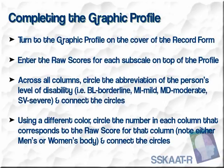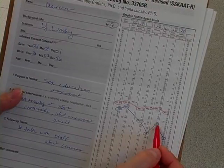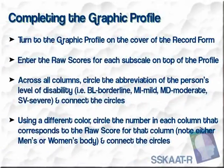To complete the graphic profile, once all the subscale scores have been recorded, turn to the graphic profile on the cover of the record form. Enter the raw score for each subscale on the top of the profile. Across all columns, circle the abbreviation of the person's level of disability — borderline, mild, moderate, or severe — and then connect the circles. Using a different color, circle the number in each column that corresponds to the raw score for that column. Note that either men's or women's bodies should be completed, not both, and then connect the circles.